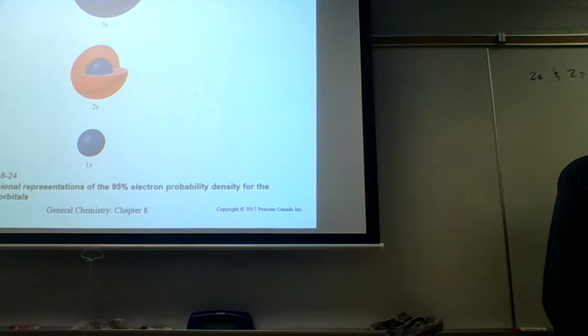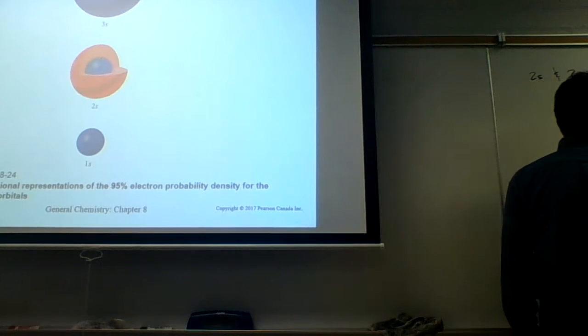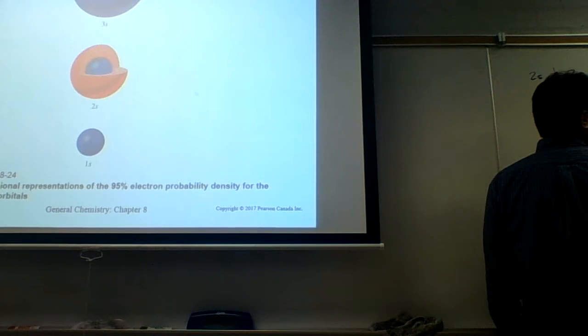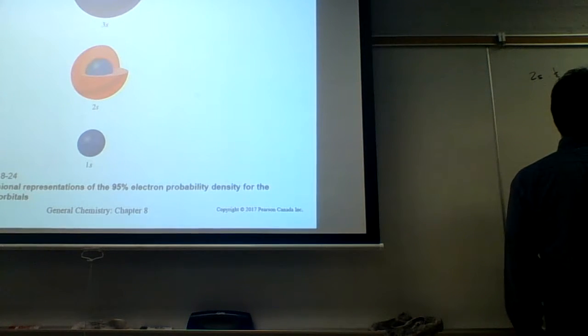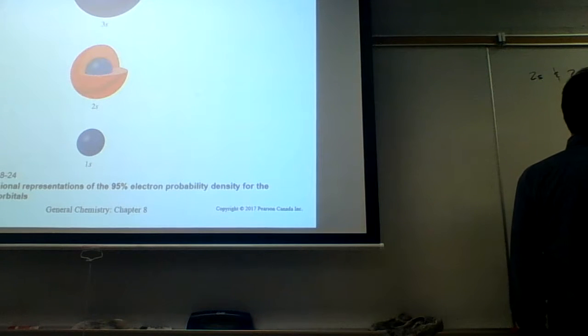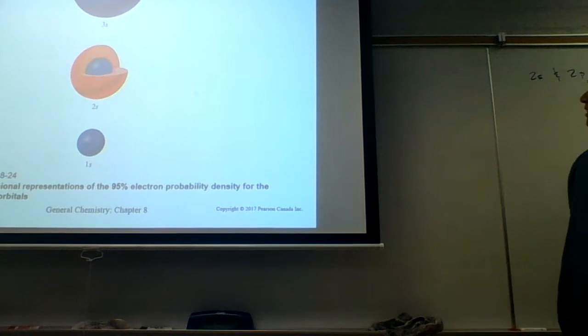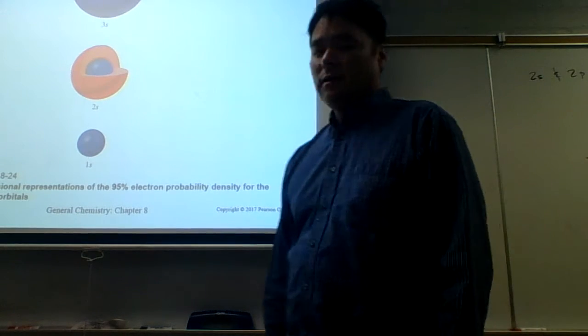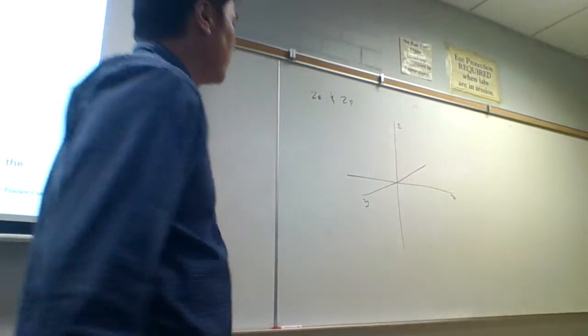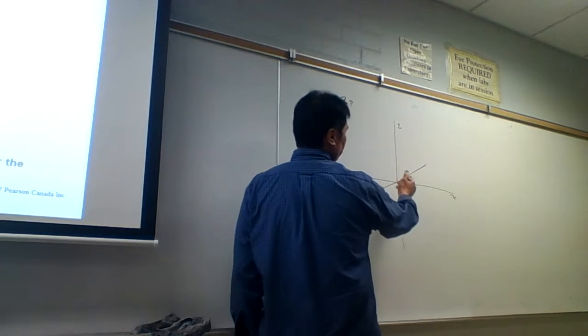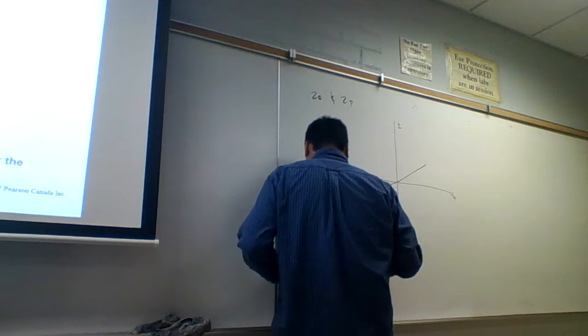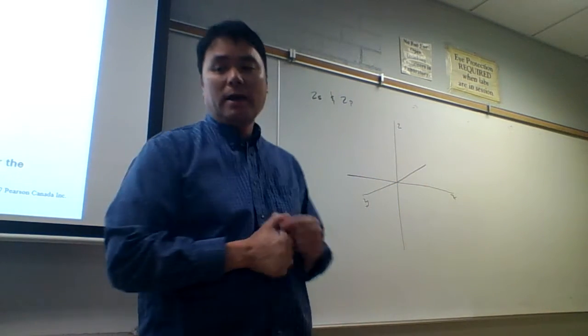Like this with x here and then y and then z. I don't know, right hand, left hand, it doesn't matter. Actually, you know what? It doesn't make much difference. Okay, so if I draw a 2s orbital, how should I draw that out?